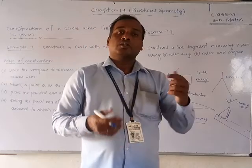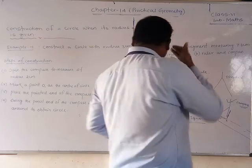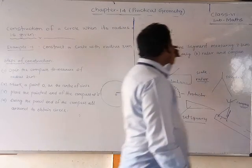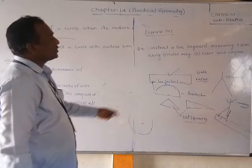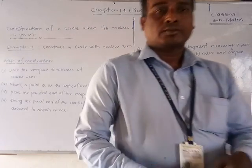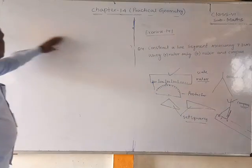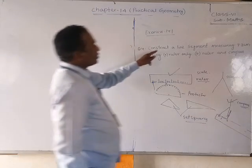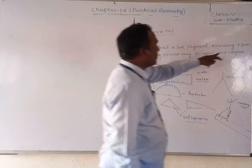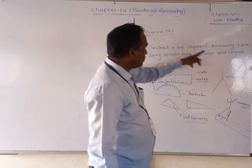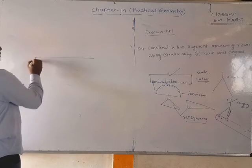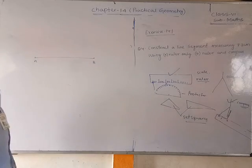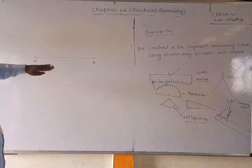Now let us learn about constructing a line segment measuring 7.3 cm — this is your exercise pattern. The question says: construct a line segment measuring 7.3 centimeters using ruler only, and then using ruler and compass. So first let us draw line segment AB of 7.3 centimeters using ruler only. A ruler means a scale — this is the ruler.